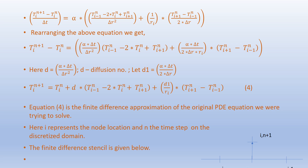Accordingly, we get: [T_i^(n+1) - T_i^n] / Δt = α · { [T_(i-1)^n - 2·T_i^n + T_(i+1)^n] / Δr² + (1/r_i) · [T_(i+1)^n - T_(i-1)^n] / (2·Δr) }.